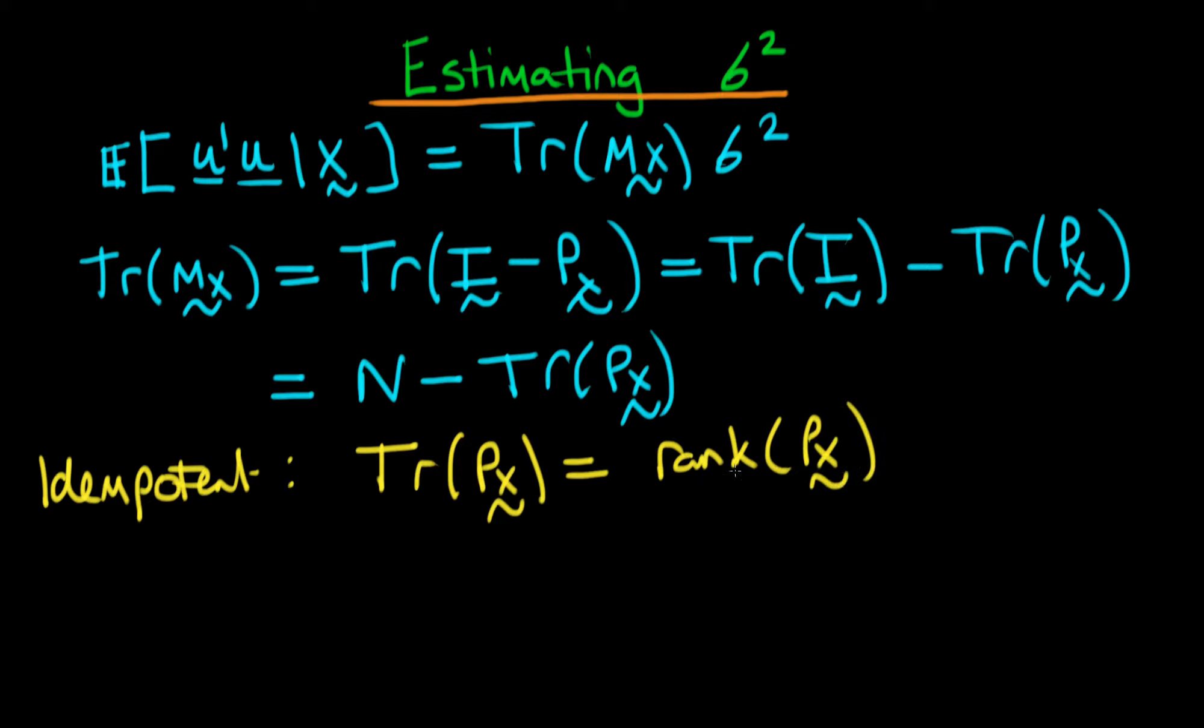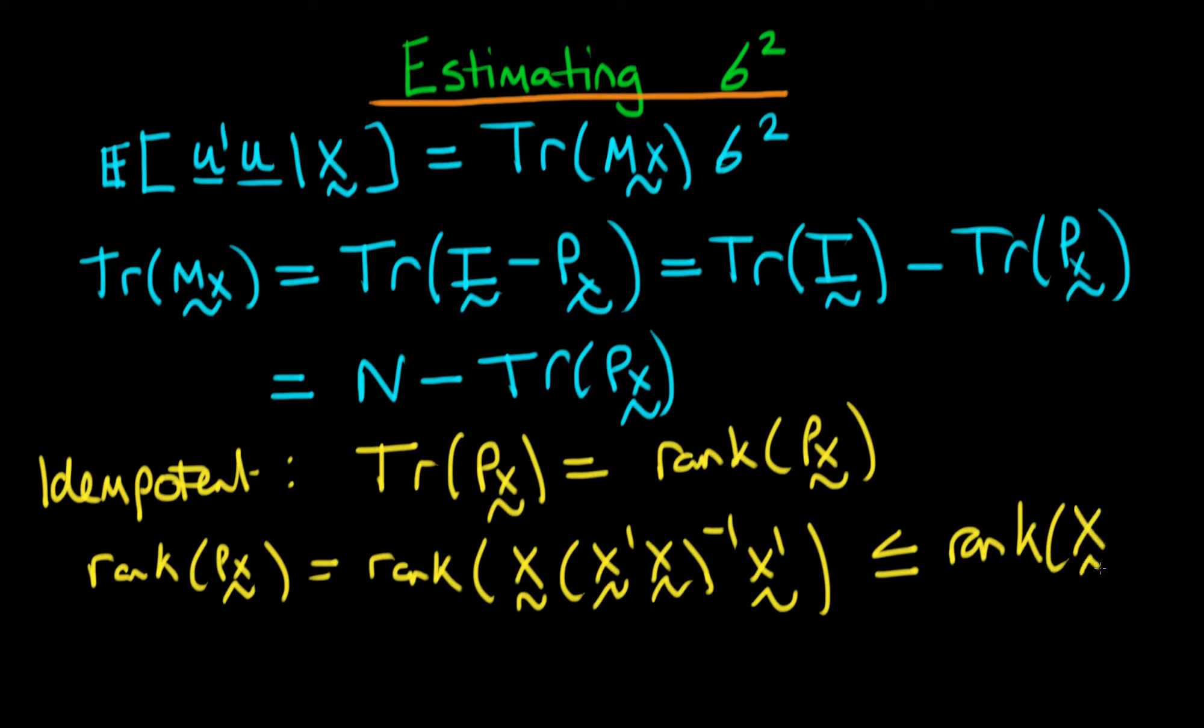How does that help us? We can write that the rank of px equals the rank of x times x prime x to the power minus 1 times x prime. We're just taking x and multiplying it by some other stuff, so this has to have a rank which is less than or equal to the rank of the matrix x. There's no way we can take a matrix x and multiply it by something to get something of higher rank.